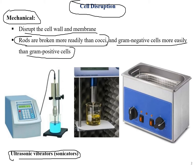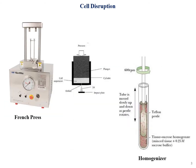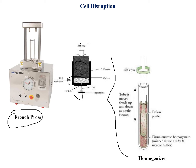Another machine is the French press. We apply pressure to a cell suspension inside a cylinder using a plunger — pushing down the plunger breaks down all of the cells.